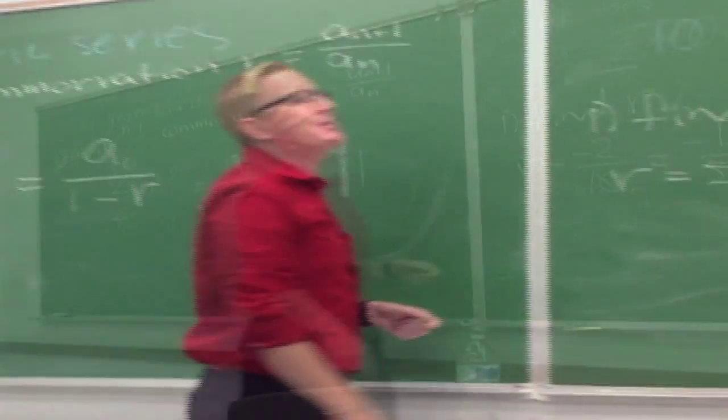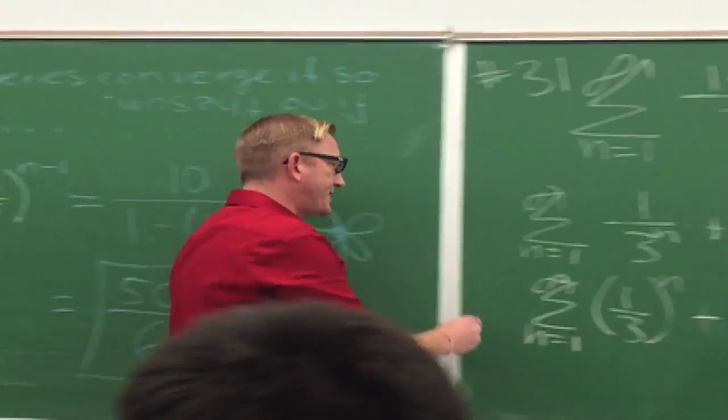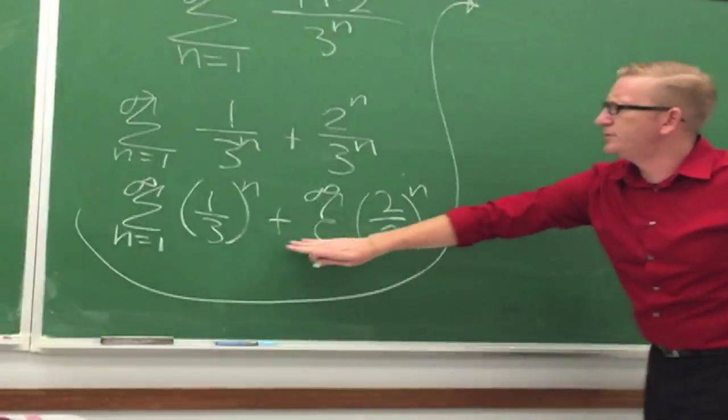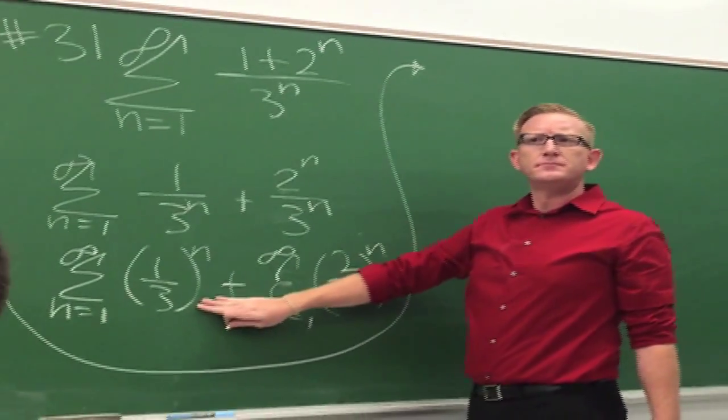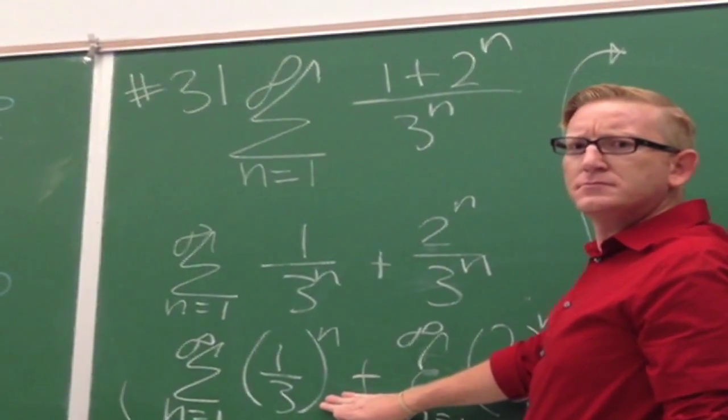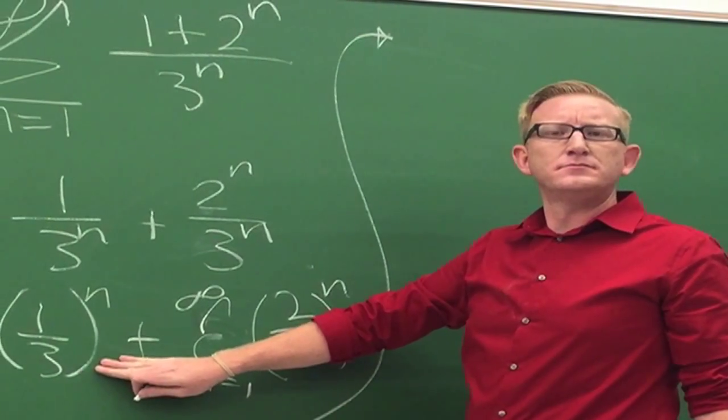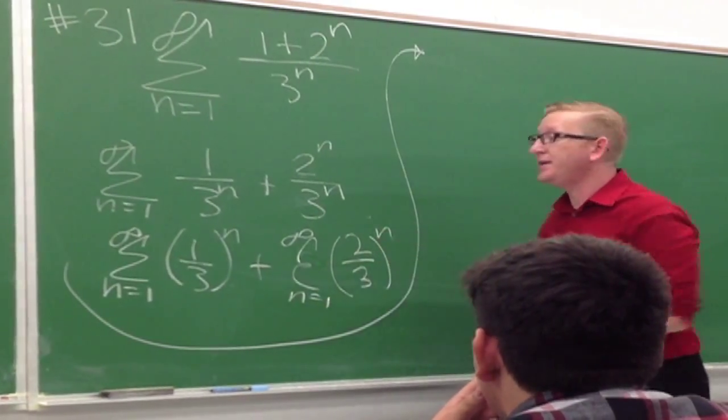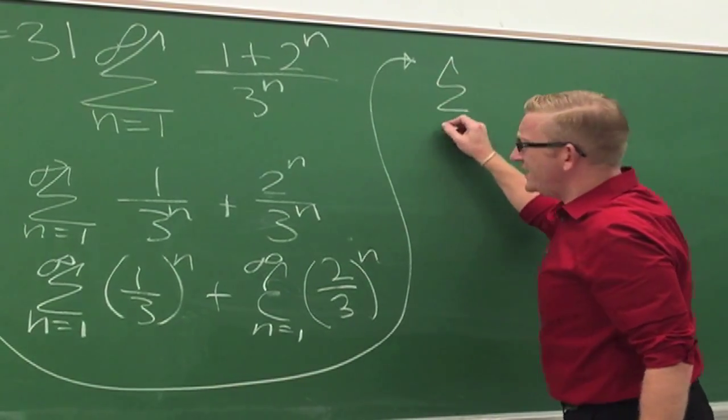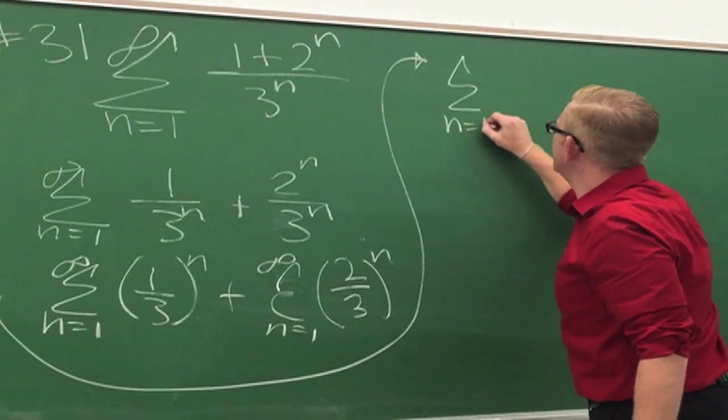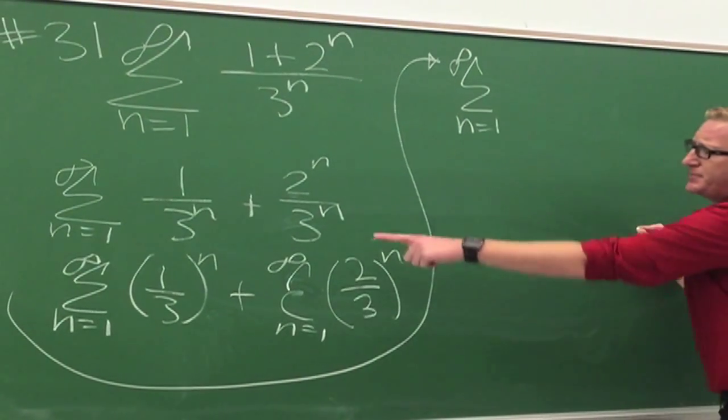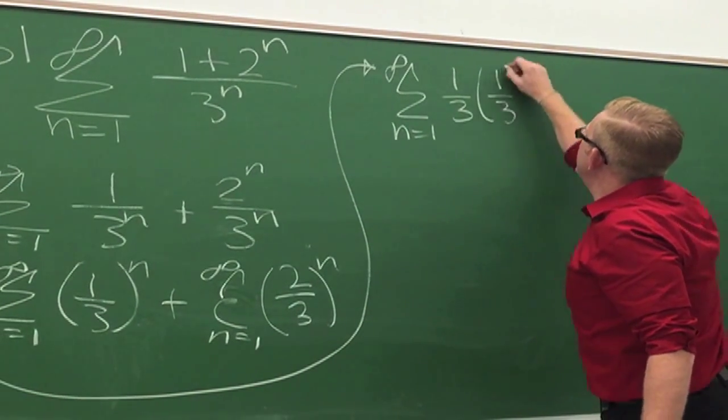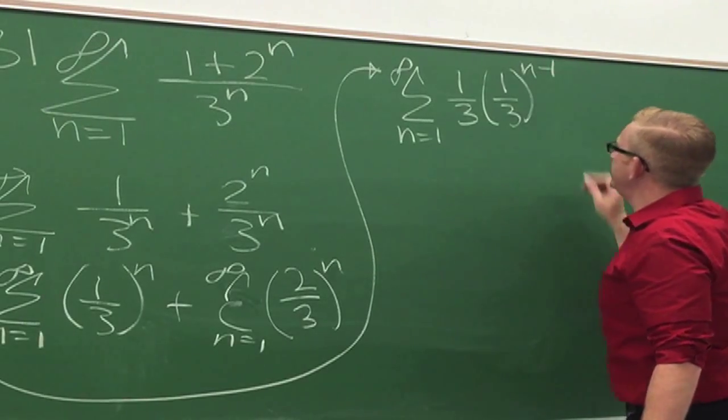All right. So how are we going to re-index that? I'm going to take it to the top. I'm trying to re-index this guy. Anybody? First one's on me. First one's free. Take that. We're not trying to change a dang thing. We're just trying to make it look a little bit different. That's to infinity up there. And then I'm going to spit out a term. And then this is going to be one-third to the n minus one. Yuck.